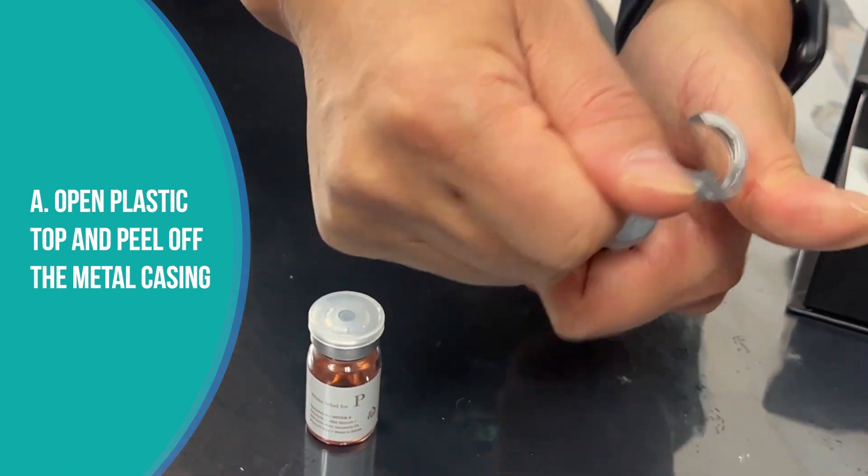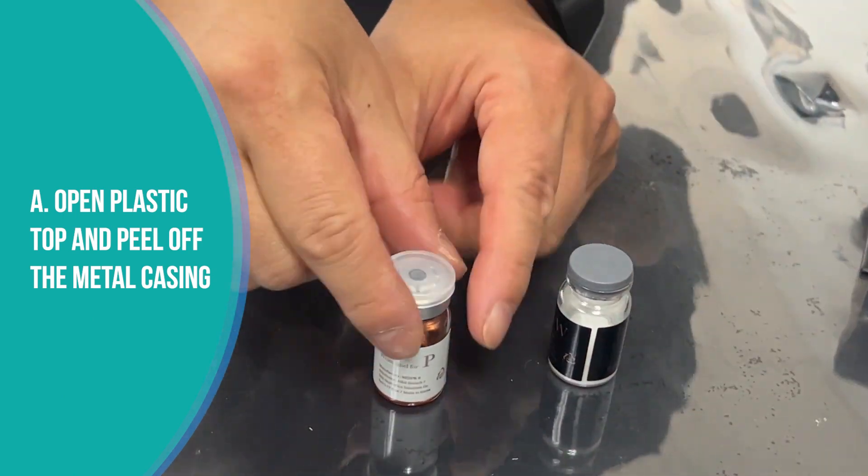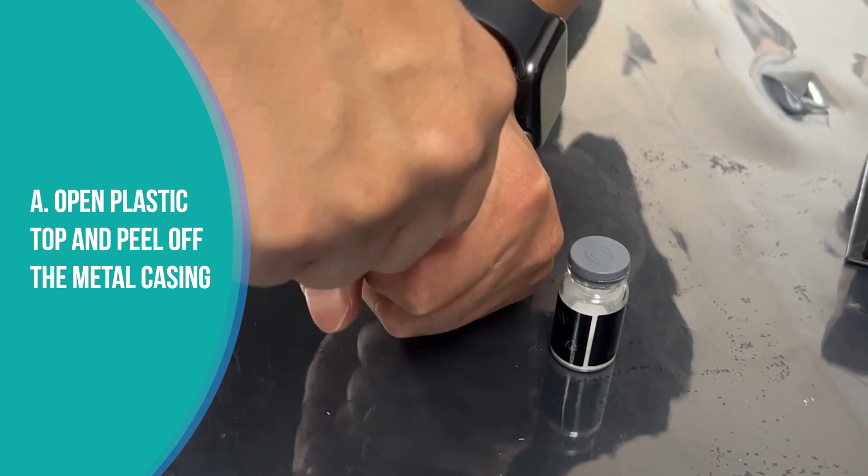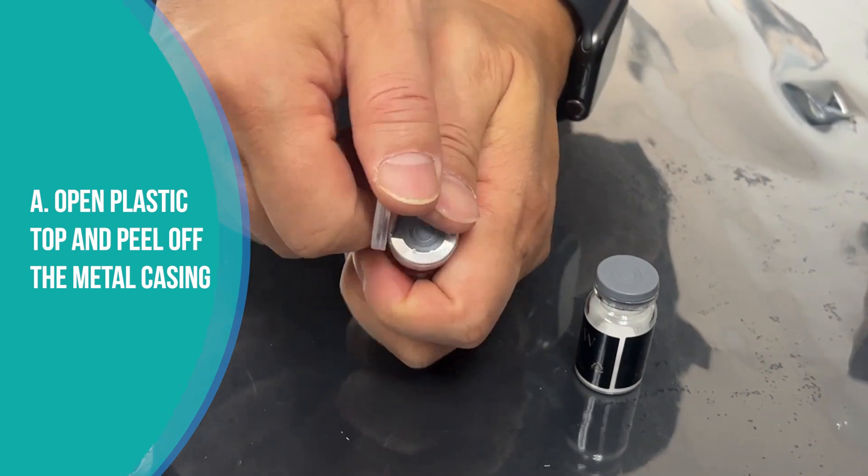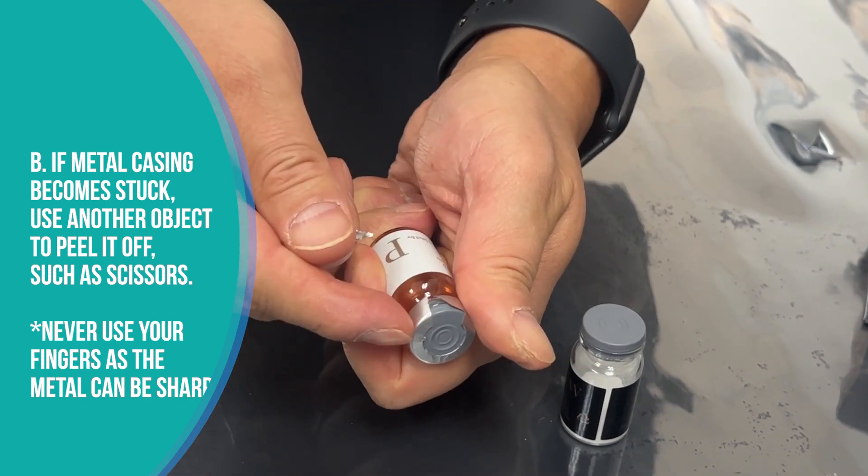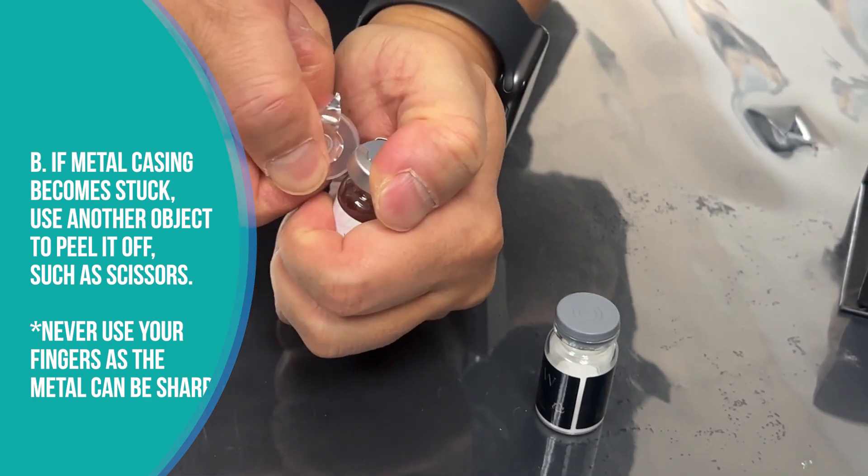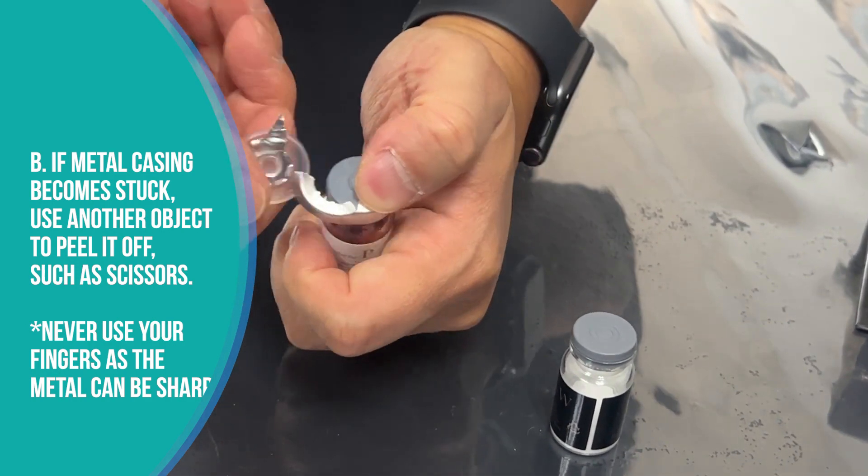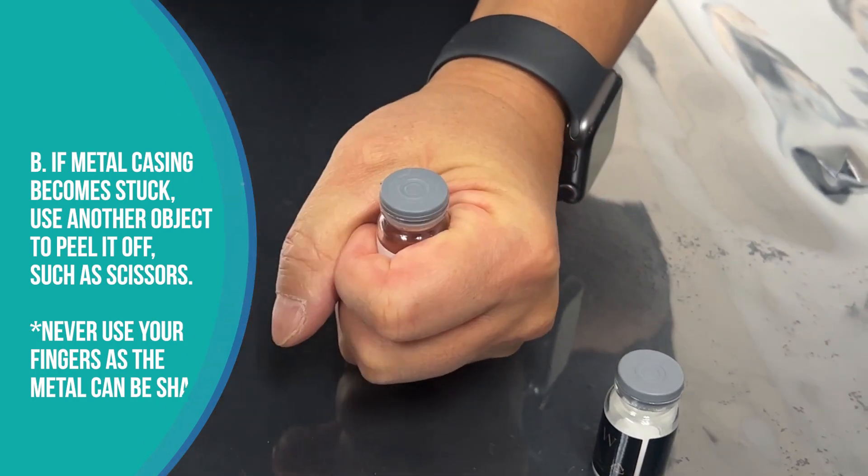Open the plastic top and peel off the metal casing. If the metal casing becomes stuck, use another object to peel it off, such as scissors. Never use your fingers as the metal can be sharp.